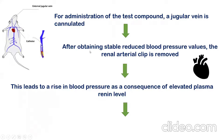Once you get a stable reduced blood pressure value, then you can remove the artery clamp. As soon as you remove the artery clamp, there is a sudden rise in the blood pressure observed, and this rise in blood pressure is because of the stimulation of the renin-angiotensin system from the kidney.